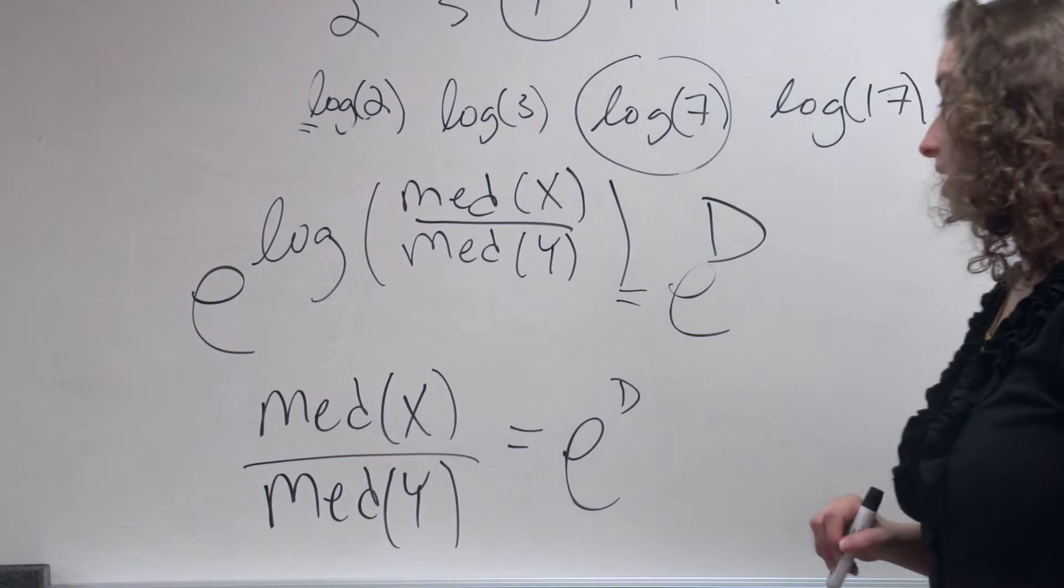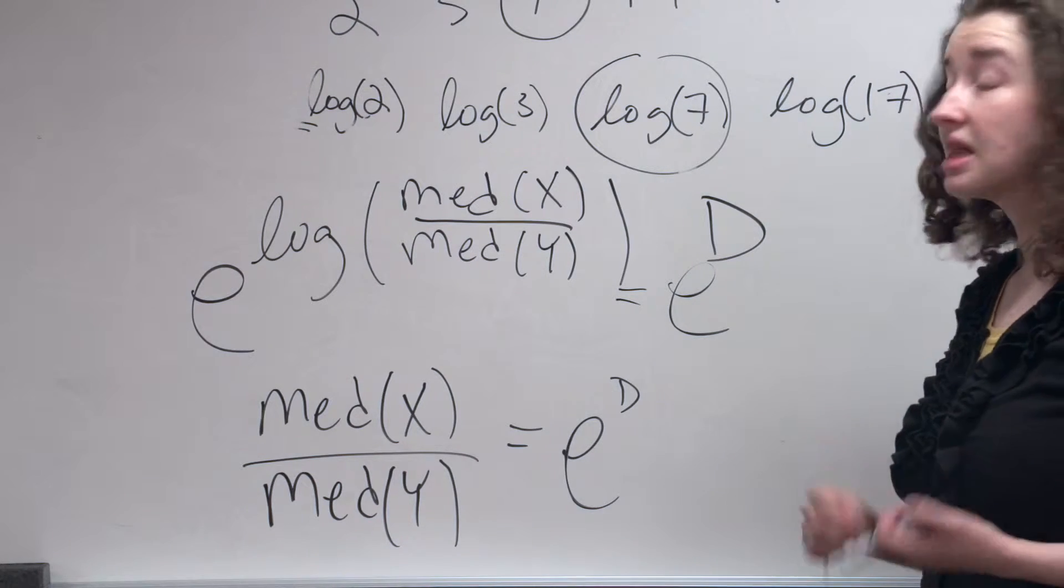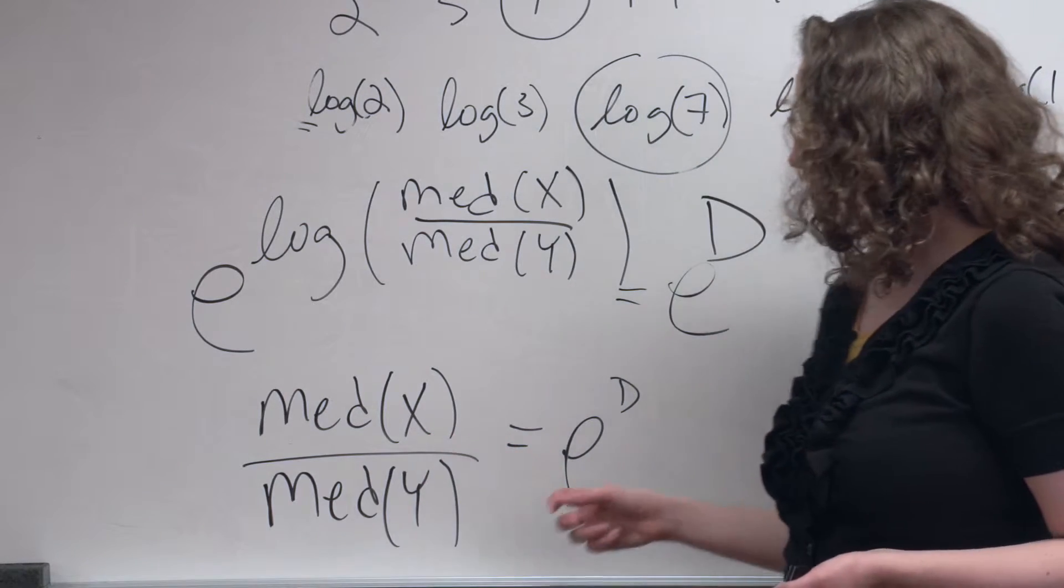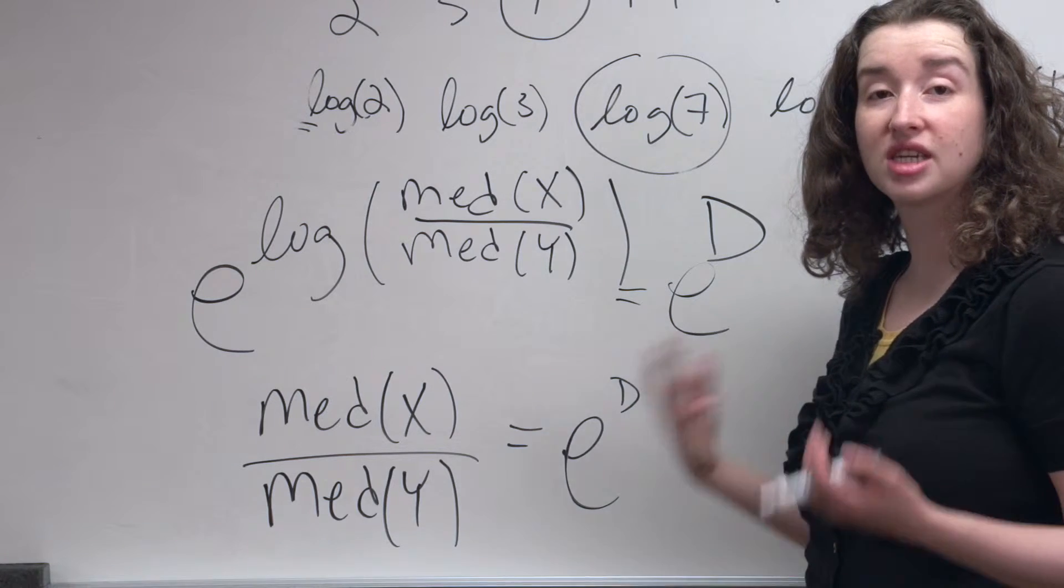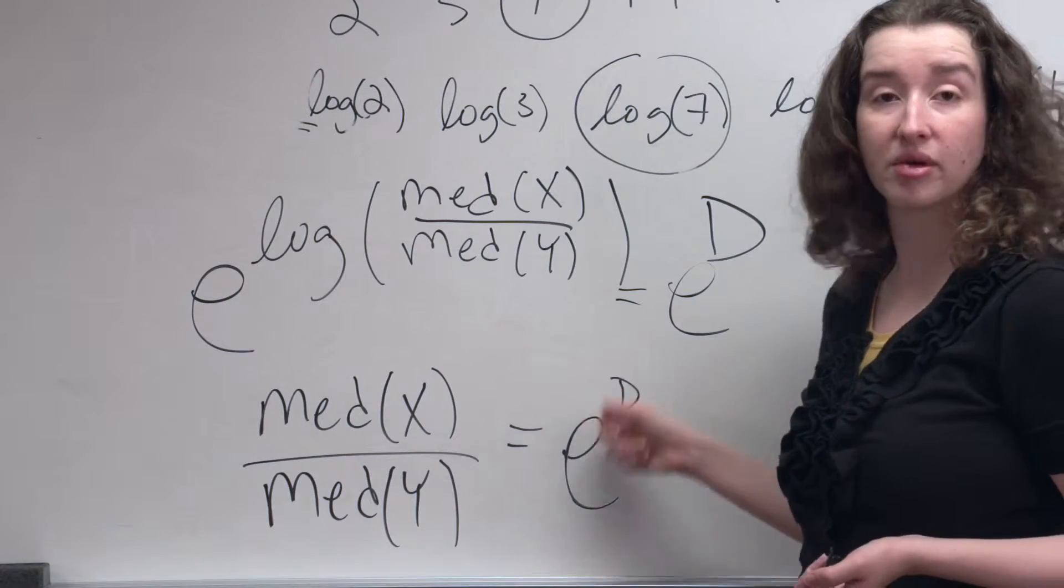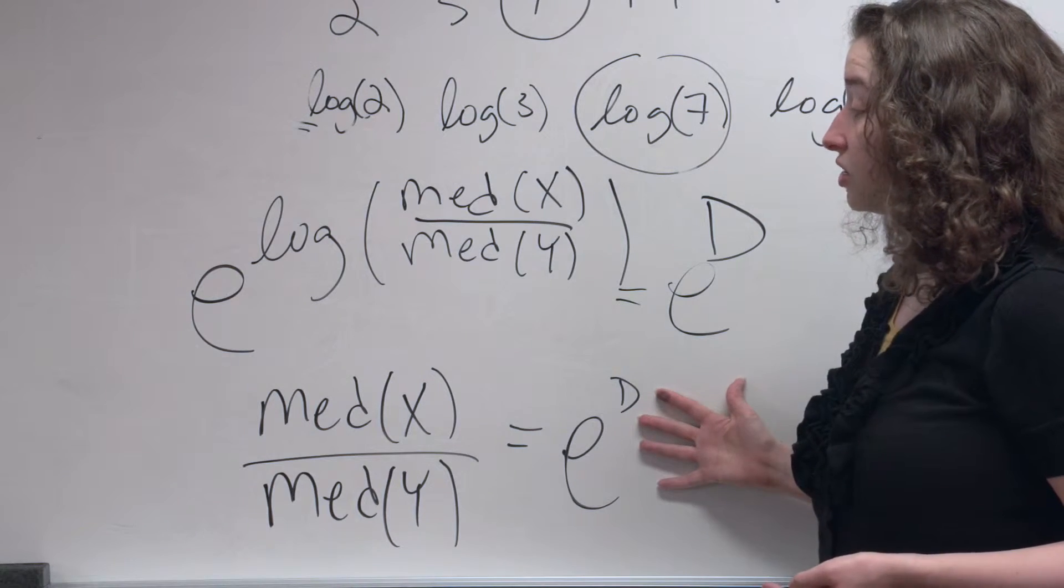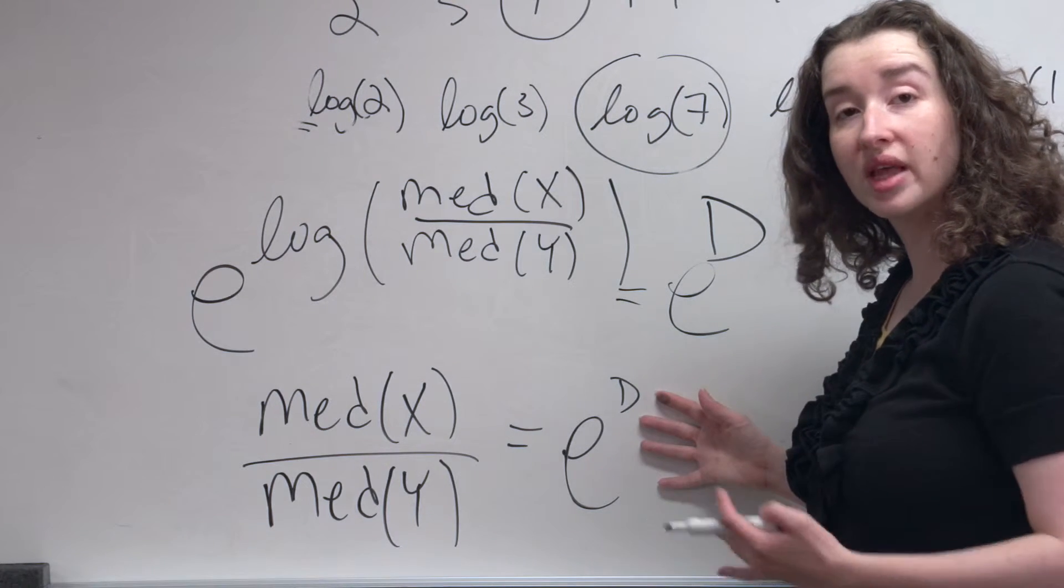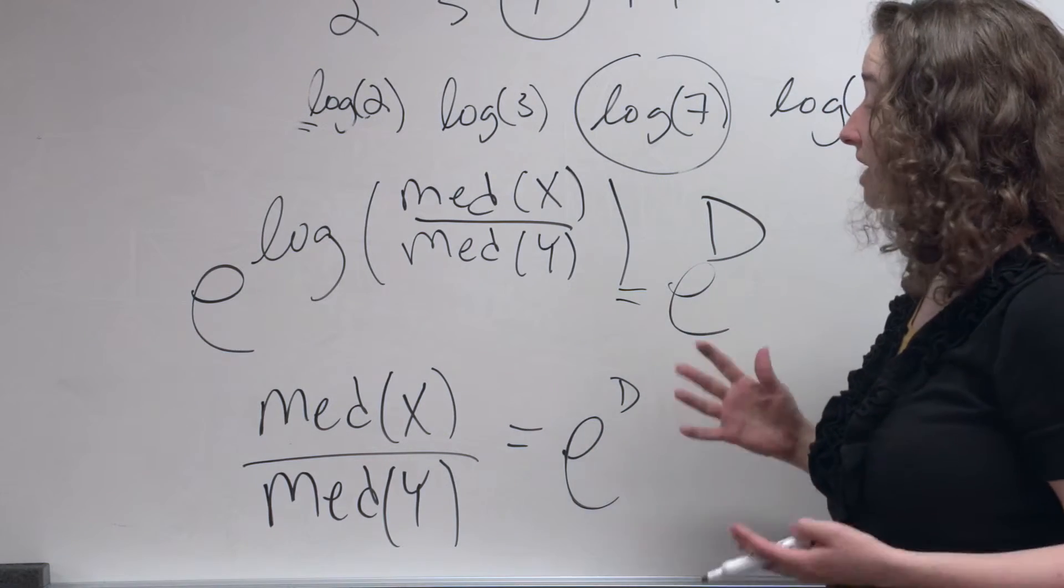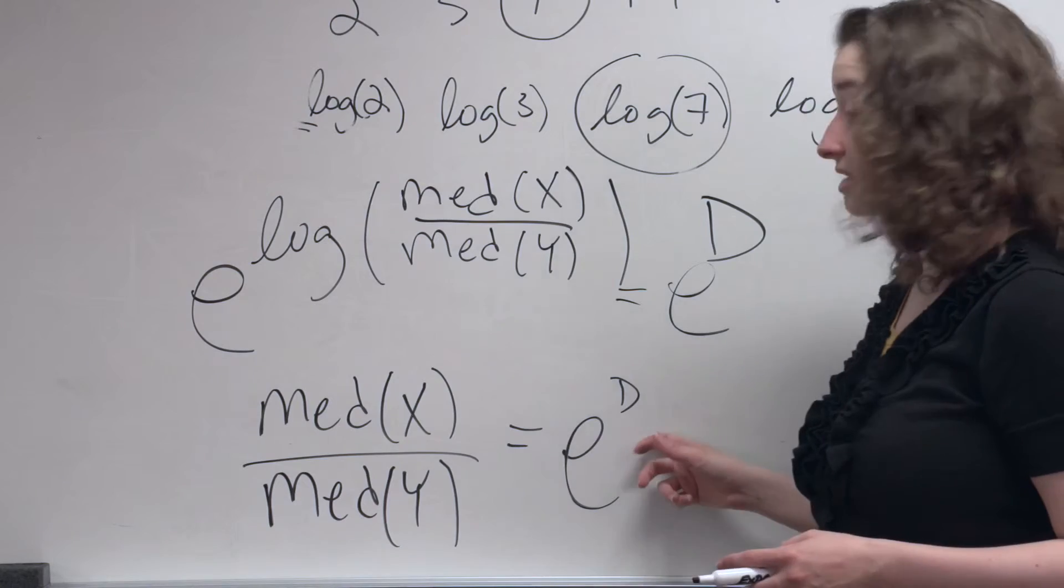I can stop here if I want. Instead of talking about what the difference in log income, the difference in mean log income is, I can say the ratio of the median income in the Midwest and the Northeast is whatever this quantity is. And remember that d is some particular number in your t-test, in your calculation, and 2.7 raised to that particular number is also just some number. This is just some number, like 5.